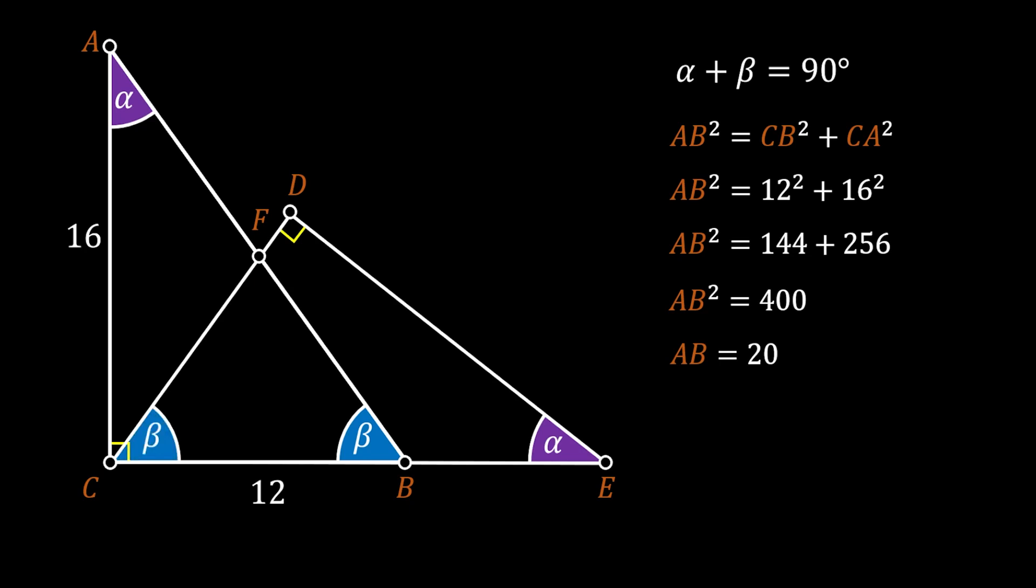Since we already know that the sum of the angles alpha and beta is equal to 90 degrees, that means that the remaining acute angle at the point C must be equal to alpha.